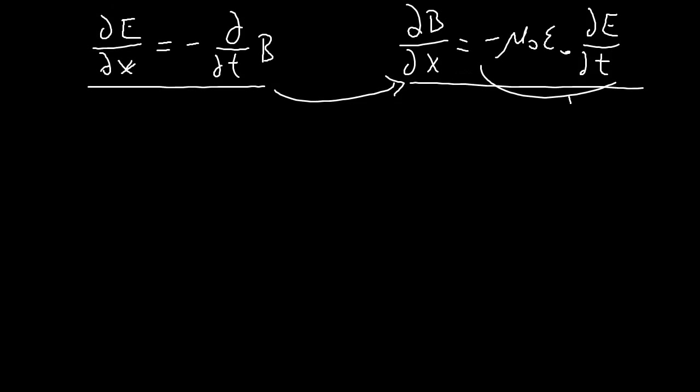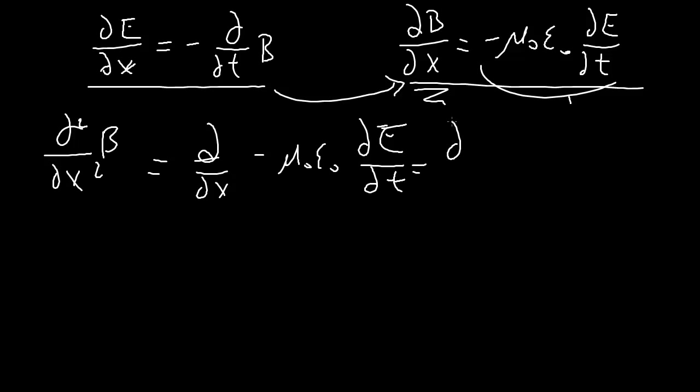Similarly, we can do the exact same thing but for the magnetic field. Going through the same process, we'll take the spatial derivative again of this equation. So ∂²B/∂x² equals -∂/∂x(μ₀ε₀·∂E/∂t). Swapping that up will give you ∂/∂t - I can put that constant outside - of ∂E/∂x, hopefully getting us μ₀ε₀·∂²E/∂t². Once again, spatial double derivative equals temporal derivative.